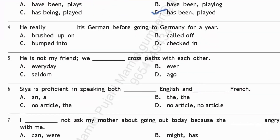Question four: 'He really dashes German before going to Germany for a year.' 'Brush up on' means to improve your existing knowledge about something. 'Call off' means to cancel. 'Bumped into' means to meet somebody unexpectedly. 'Check into' means to register on arriving at a place like a hotel or airport. The answer is option A: 'He really brushed up on his German before going to Germany for a year.'